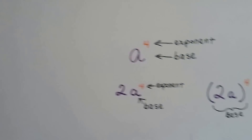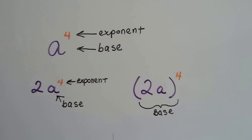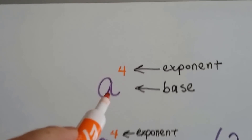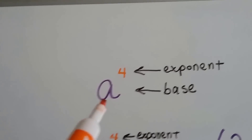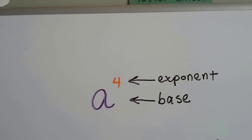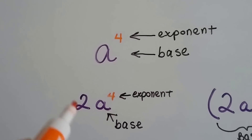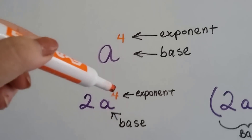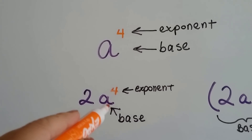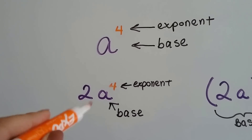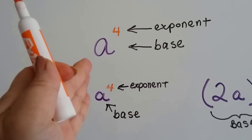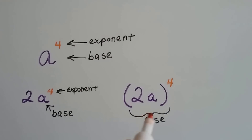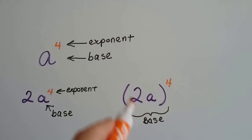I'm going to show you a few different ways that an exponent can be written with a base. In this way, this is very obviously the base and that's the exponent. When you see them like this, with a coefficient and a variable and an exponent, the 'a' is the base, not the 2. When you see them in parentheses like this, the '2a' is the base.